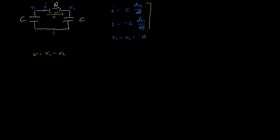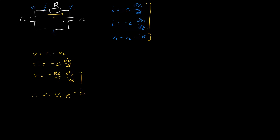From the two capacitor equations, we get that 2I equals minus C dV/dt. And from the resistor equation, we get V equals minus RC/2 times dV/dt. Solving this differential equation, we know the solution is an exponential. With initial voltage V0, we get V equals V0 times e to the minus 2 over RC times t.